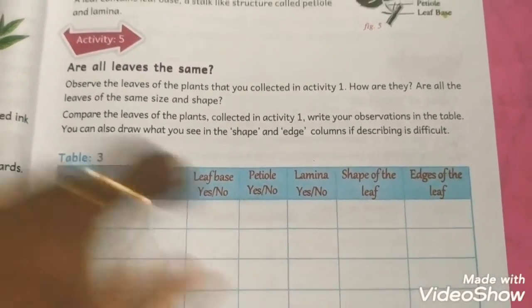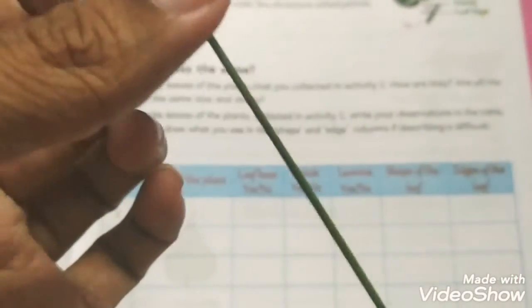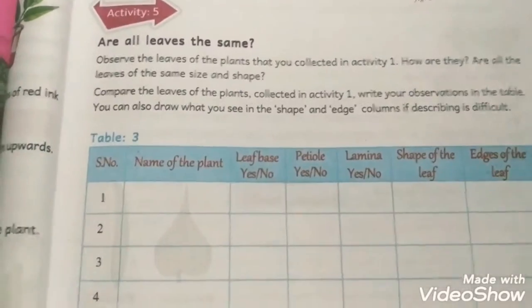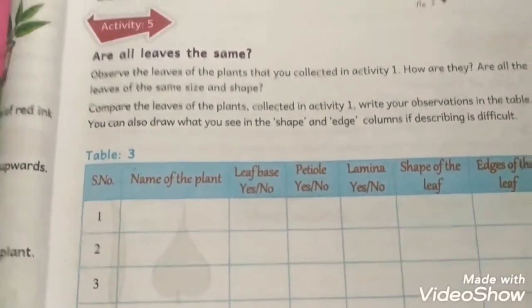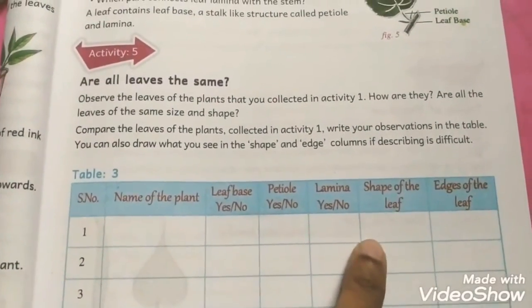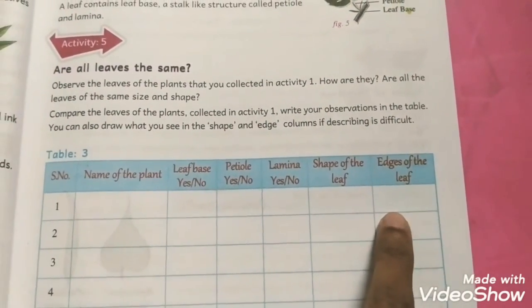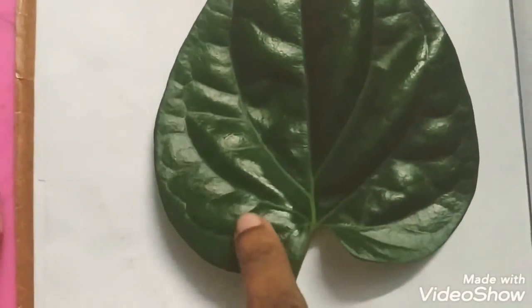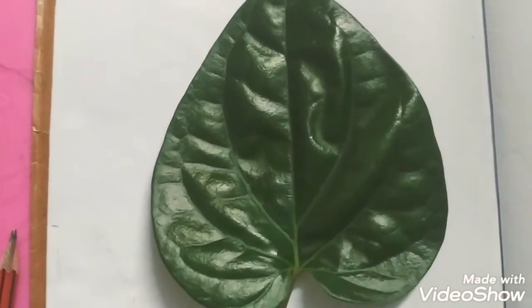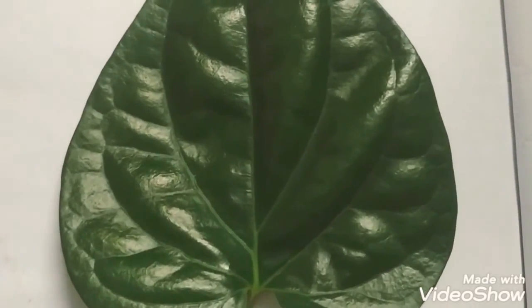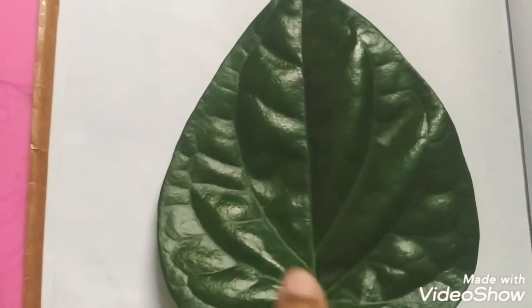Also write whether it has lamina or not, and the shape of the leaf. Some grass-like plants have a straw-like shape - that's why grass is also called straw. Mango leaves are longer. Write the edges of the leaf too. As we discussed, some thin light structures spread over the leaf - the leaf lamina consists of midrib, veins, and veinlets. These thin structures called veinlets are arranged in the form of a network. To understand this venation we have to do an activity.